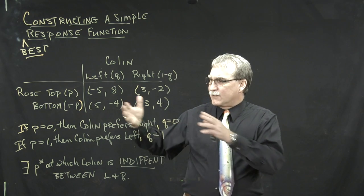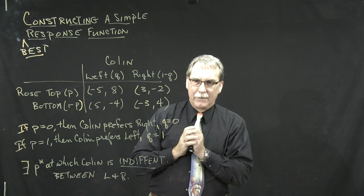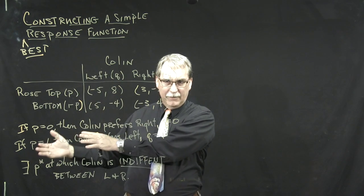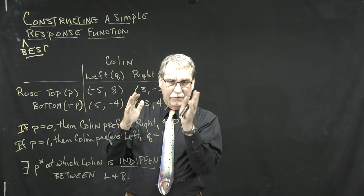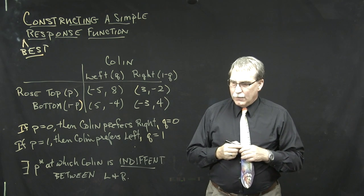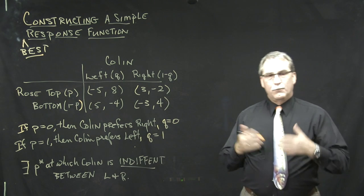So if P is smaller than this P star, Colin prefers to be in the right-hand side. If P is bigger than this value of P star, Colin prefers to be in the left-hand column. And at P star, there's a balance. This is the notion we use to construct the best response function.